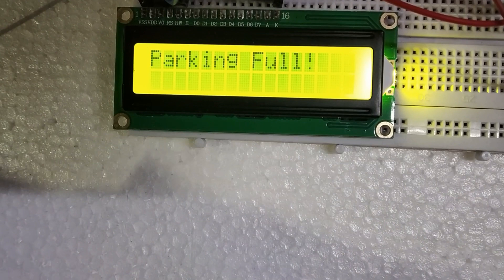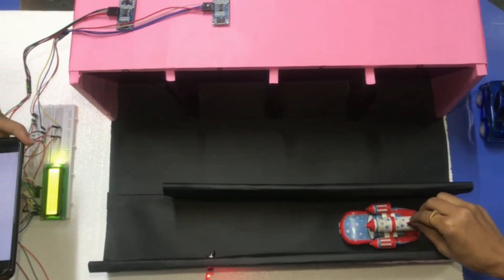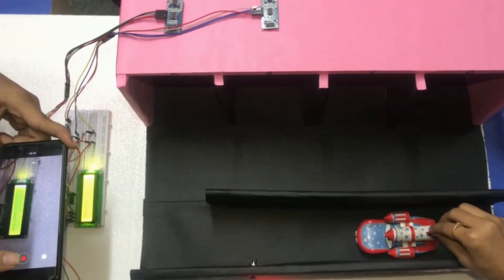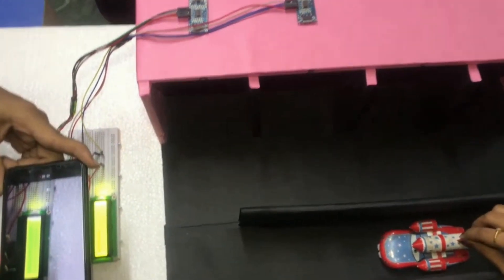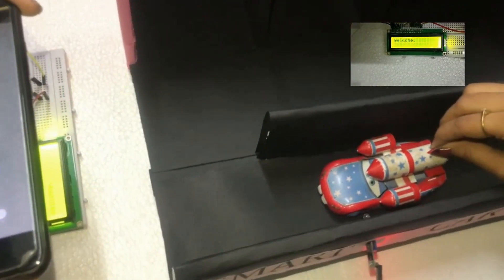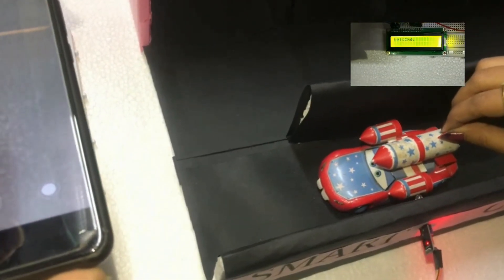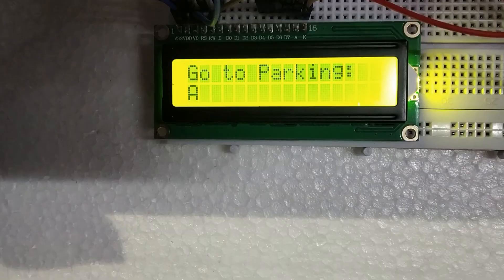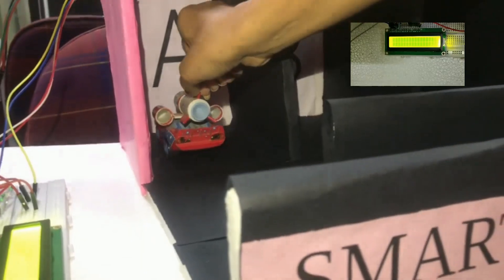Now let's see a demo of a working model. We can see a car is entering the parking. It got detected by the infrared sensor and there is a display on the LCD saying go to parking A. The car is parked in parking A.